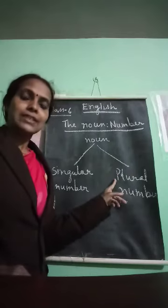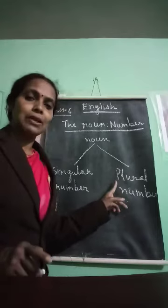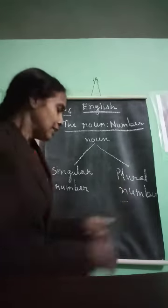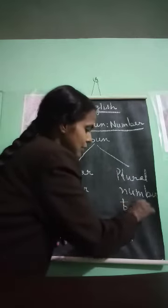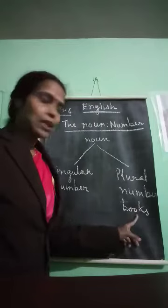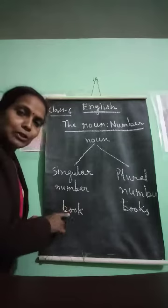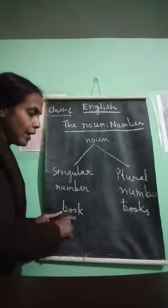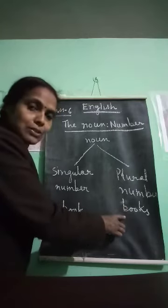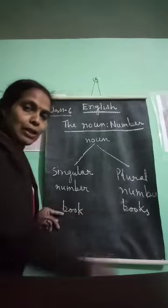And what is plural number? The noun which stands for more than one person or thing is in plural number. For example, if you say 'books,' it means more than one book, so it is plural. If you say 'book,' this noun stands for only one book, so it is singular.